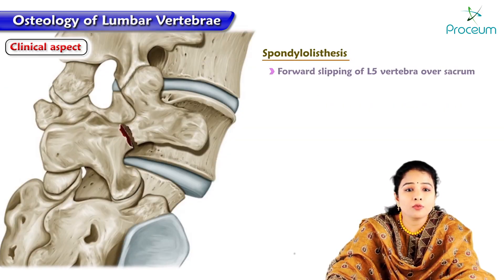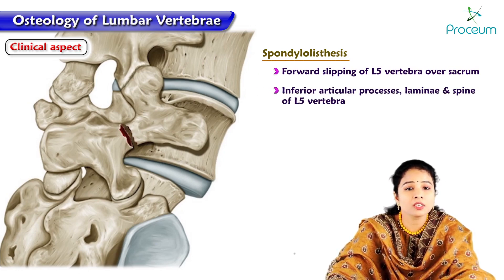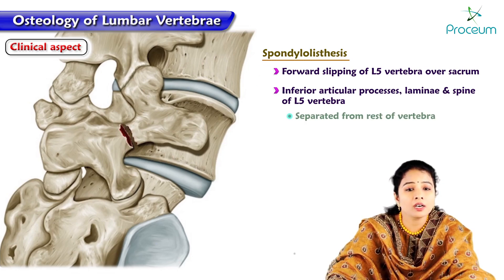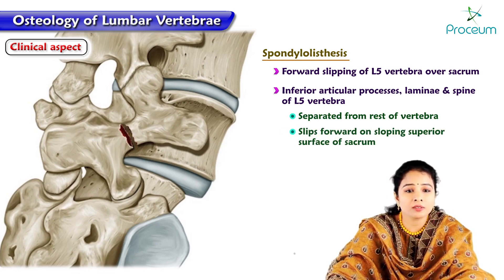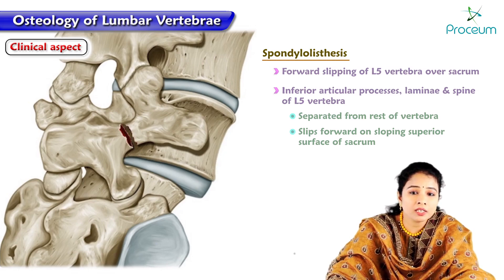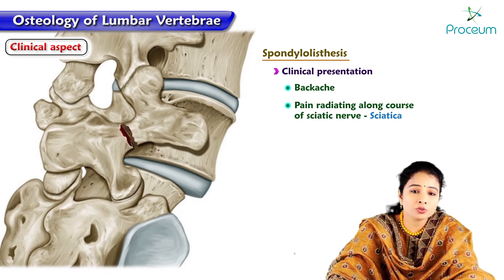Spondylolisthesis is the forward slipping of the fifth lumbar vertebra over the sacrum. The inferior articular processes, laminae, and spine of L5 vertebra are separated from the rest of the vertebra and slip forward on the sloping superior surface of the sacrum. This condition may clinically present as back pain and pain radiating along the course of the sciatic nerve, which is termed sciatica.